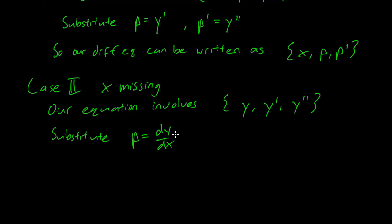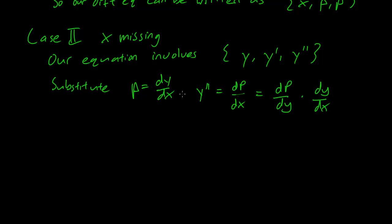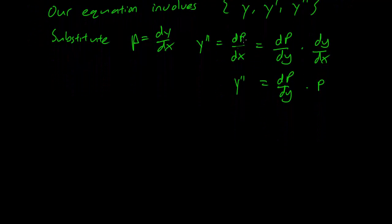And what's going to happen is that y'', which is going to be equal to dp/dx, is going to be equal to dp/dy times dy/dx. And we know that p equals dy/dx, so this is just going to be equal to dp/dy times p.